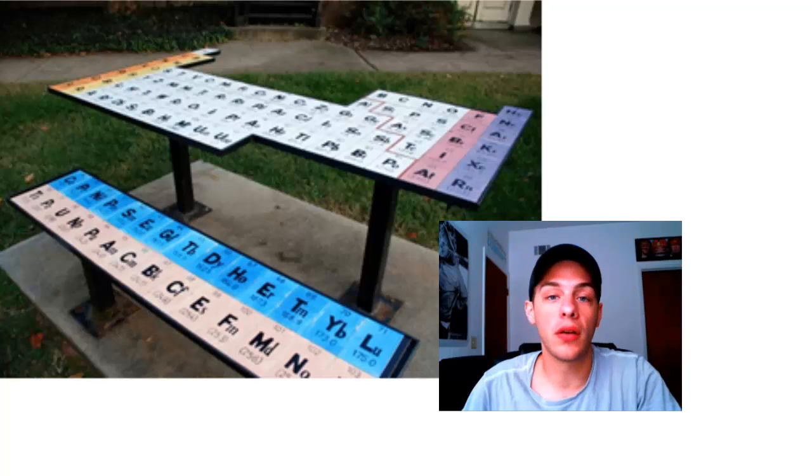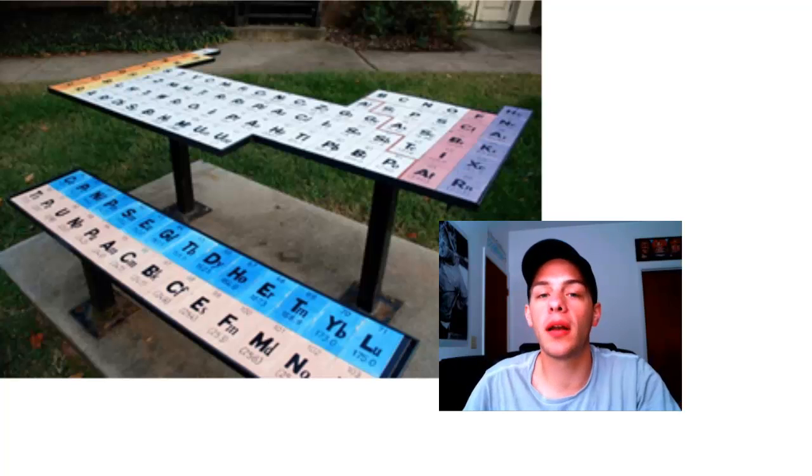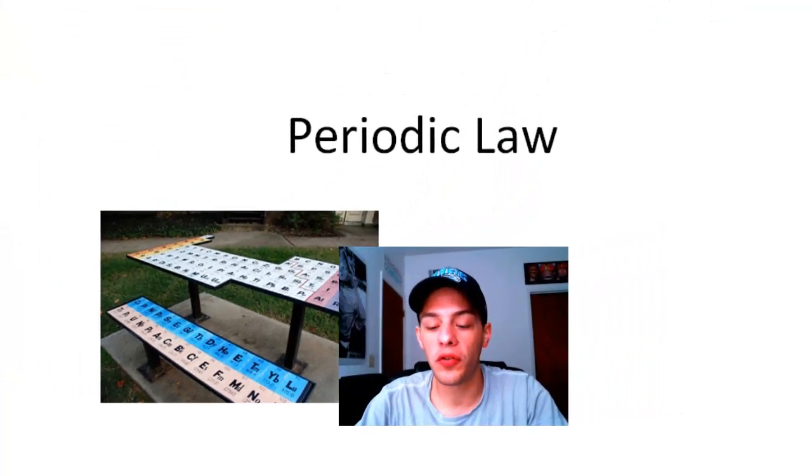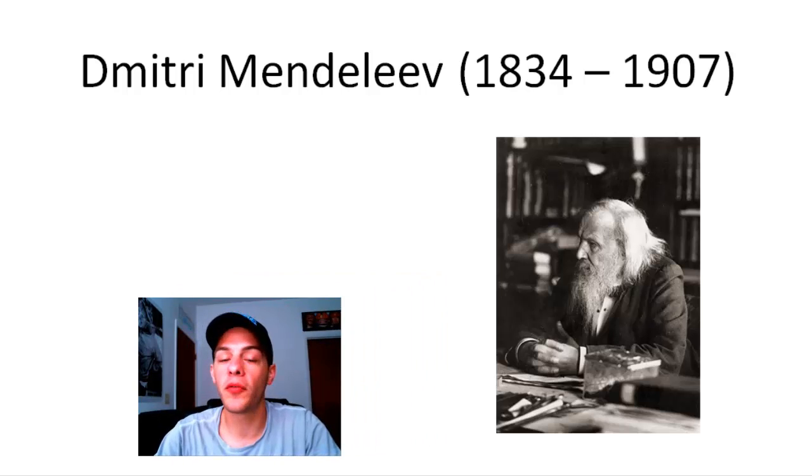In most tables you have rows and columns and all the rows have the same length and all the columns have the same height. But the periodic table has this weird looking shape to it. So why is the periodic table shaped the way it is? Well, to answer this question, let's go back to the first periodic table. This table was created by a Russian chemistry professor named Dmitry Mendeleev.